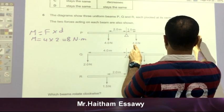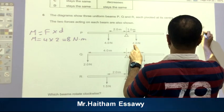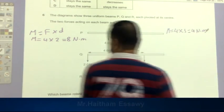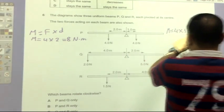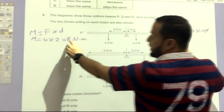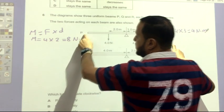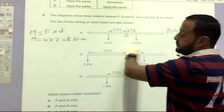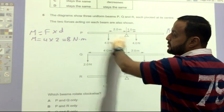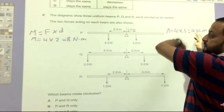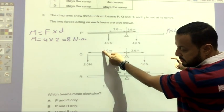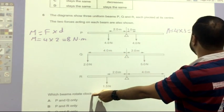The second case, the second moment of force, M equals 4 times 1 equals 4 Newton dot meter. As you see, here we have 4 Newton dot meter and here we have 8 Newton dot meter. So this beam will rotate clockwise or anti-clockwise? Here we have 8 and here we have 4, so it will rotate anti-clockwise. He said clockwise, so this is wrong answer.